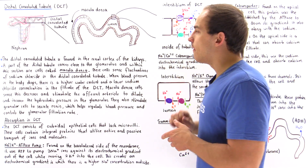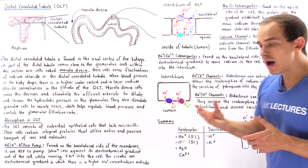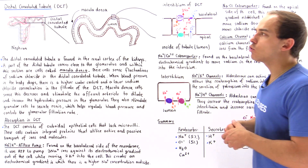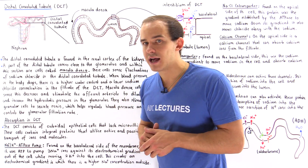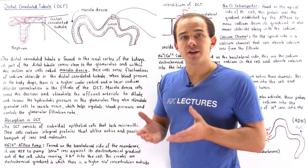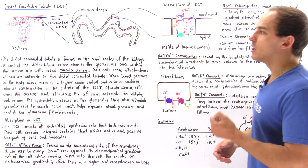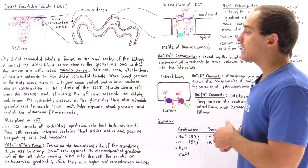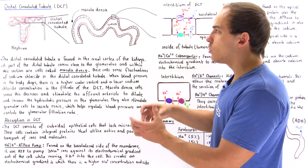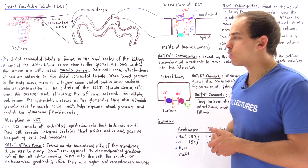The second function of macula densa cells is to stimulate the release of certain molecules that activate the granule cells of the juxtaglomerular apparatus. These granule cells release renin — the proteolytic enzyme responsible for controlling the renin-angiotensin-aldosterone pathway, which regulates blood pressure in the body. So macula densa cells control both renin release and afferent arteriole dilation.